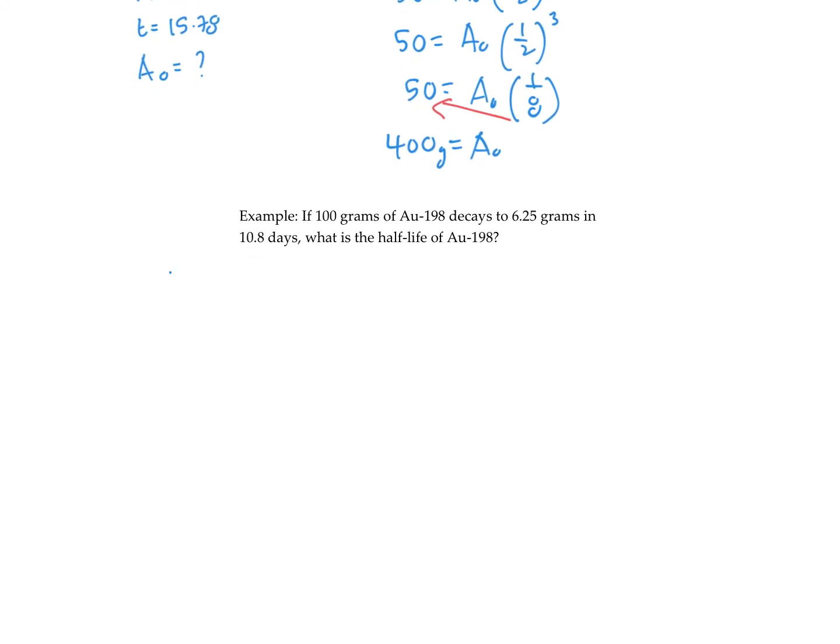And the last example here. We have an initial amount of 100 grams. We have a final amount of 6.25 grams. The time passed is 10.8 days. And we want to figure out the half-life.